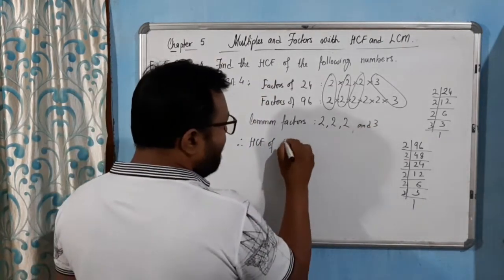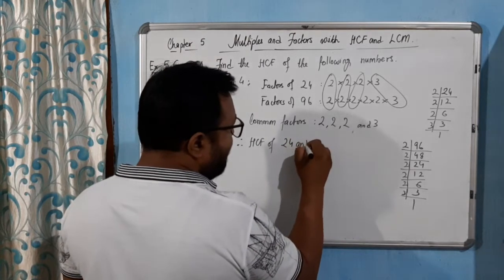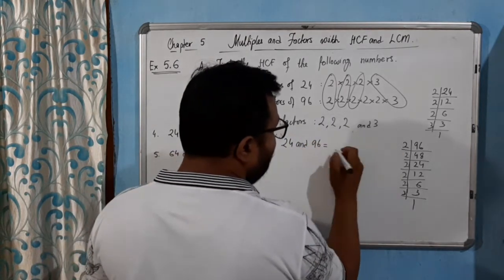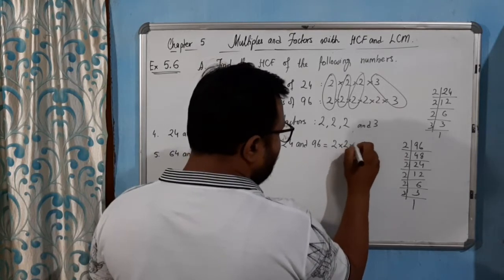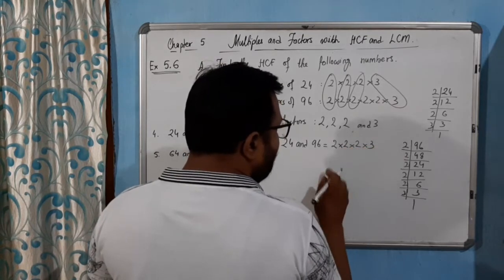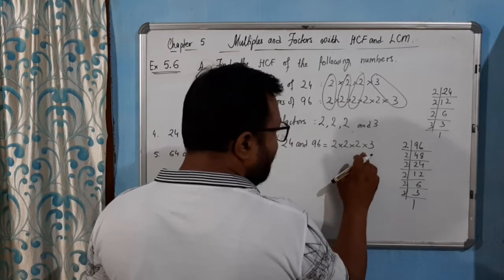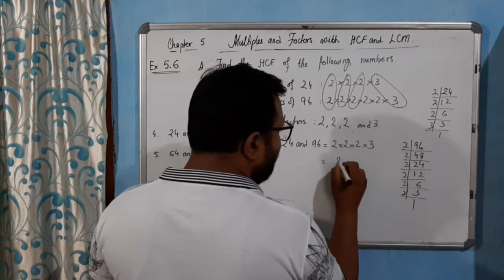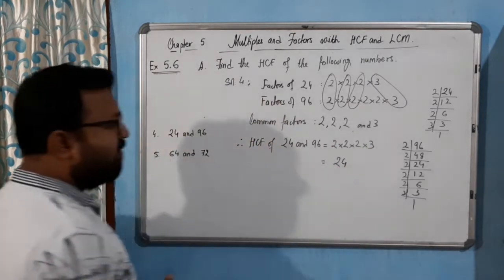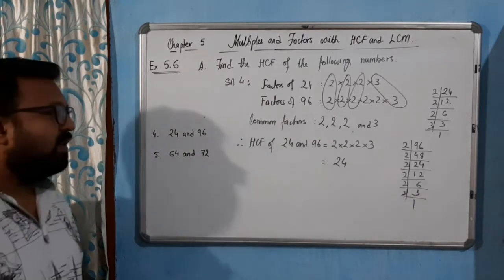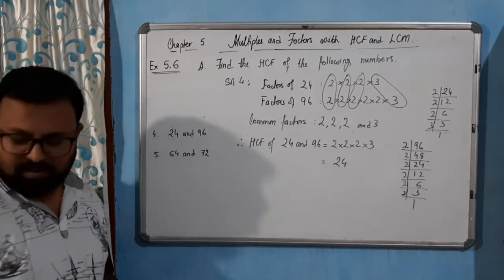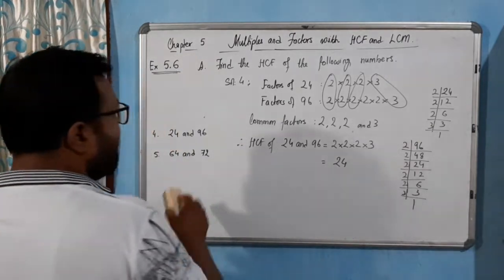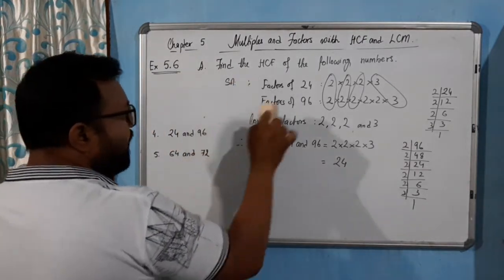Therefore the HCF of 24 and 96: we multiply all the common prime factors: 2 × 2 × 2 × 3 = 24. So the HCF of 24 and 96 is 24. That is clear. It's very simple.